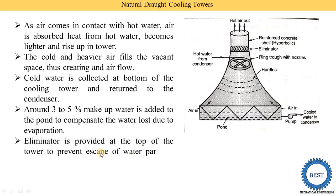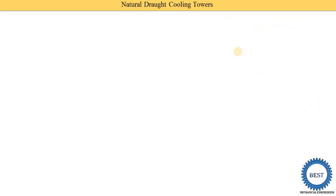An eliminator is provided at the top of the tower to prevent escape of water particles carried by air leaving the tower. The eliminator absorbs water particles from the air, so water particles are captured before the air exits. This completes the construction and working of the natural draft cooling tower.